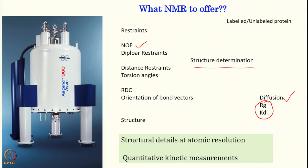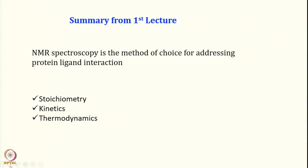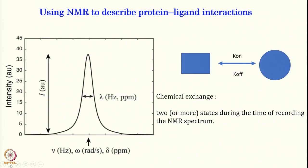NMR can also offer dissociation constants. Structure details using NMR can be defined at atomic resolution, and we can get quantitative kinetic parameters. Therefore, NMR is uniquely placed to offer both structure and thermodynamics of protein-protein interactions. It can give you stoichiometry — at what ratio the two partners interact — what the kinetics are, the rate of interaction, and the thermodynamic parameters involved in the interaction. These are the parameters that can be derived from PPIs.